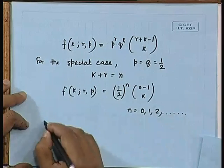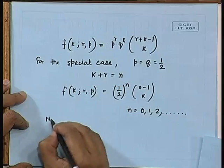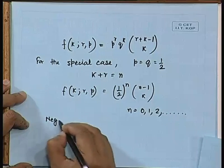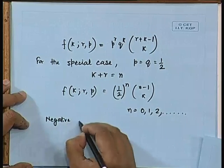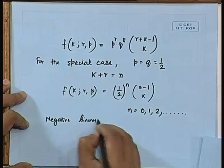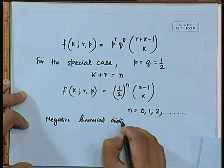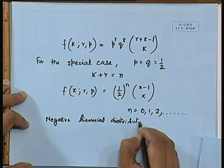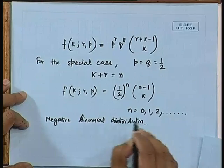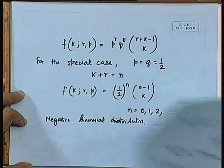For the special case of a fair coin toss, p = q = 1/2. Taking k + r = n, f(k, r, p) equals one-half to the power n times the combination (n-1) choose k, for n = 0, 1, 2, etc. This expression is nothing but the negative binomial distribution. So what we have got as the probability of N equal to n is a negative binomial distribution.